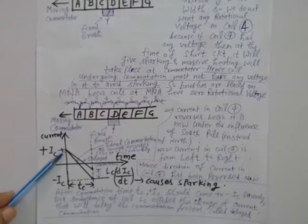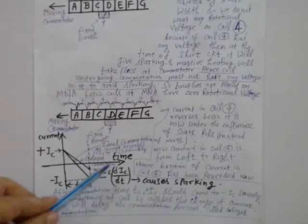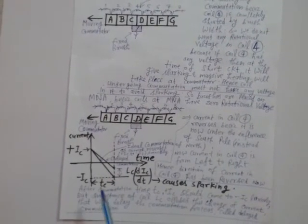During the commutation time tc, the current has to reverse from plus Ic to minus Ic. If this reversal happens smoothly and linearly without any sparking, it is called ideal commutation or good commutation — that is what is desired.